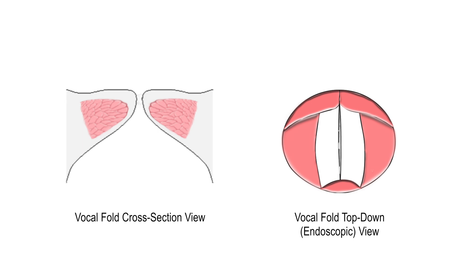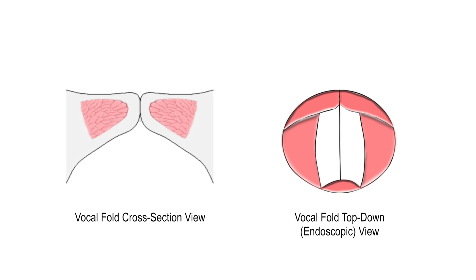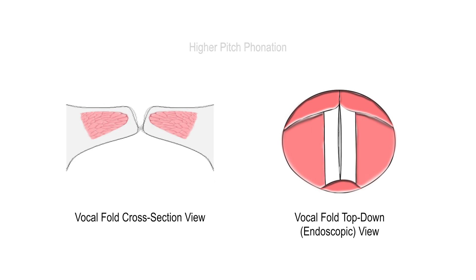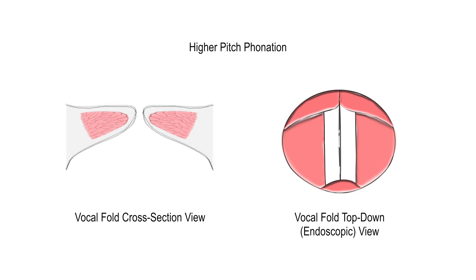Changes in pitch can alter how the vocal folds vibrate. As pitch increases, cricothyroid muscle activation causes the vocal folds to elongate and thin out, reducing the difference between the upper and lower margins. Vocal fold vibration speeds up, resulting in more vibration cycles completed per second.